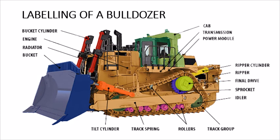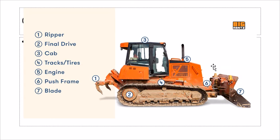At the rear, the ripper — the claw-like structure — is operated by a hydraulic cylinder that moves it in both vertical and horizontal positions. On the top there is a cab, a transmission system, and the power module. The major labeled parts include the ripper at the back, the final drive with its sprocket, the engine, and the push frame, which is responsible for the movement of the blades or metal plates.